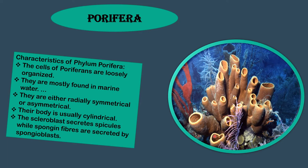They have a simple body which is roughly cylindrical in shape. The body is covered with pores through which water and food enter the body cavity. There is a single large pore present at the top of the body for the exit of waste dissolved in water. Sponges lack tissue organization and a true body cavity is absent. Sypha, Spongia and others are examples of Porifera.